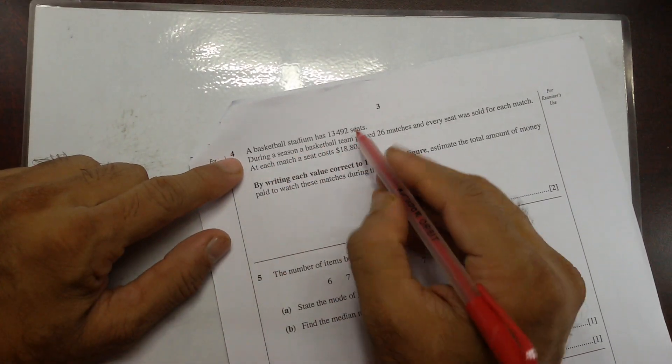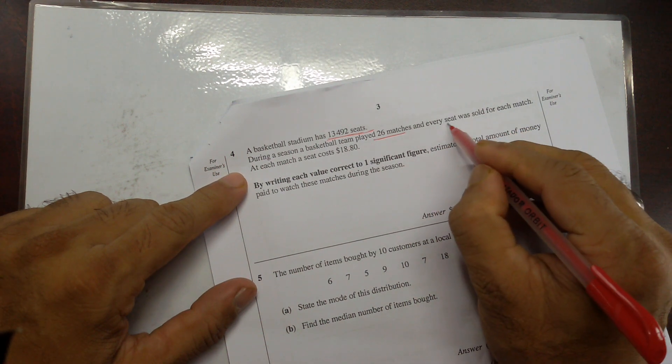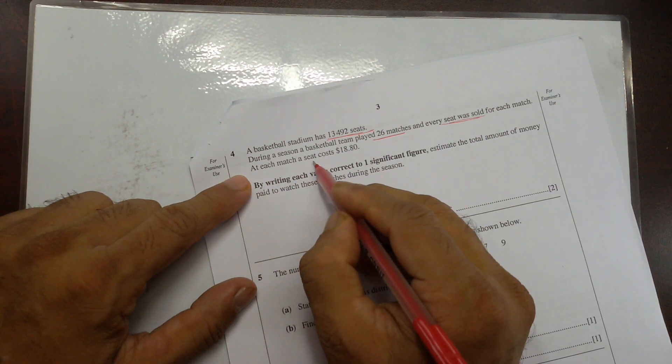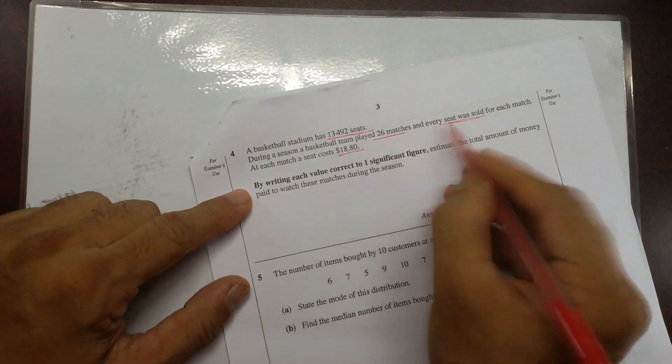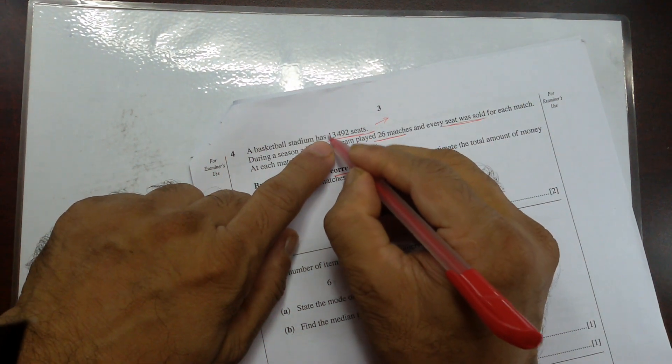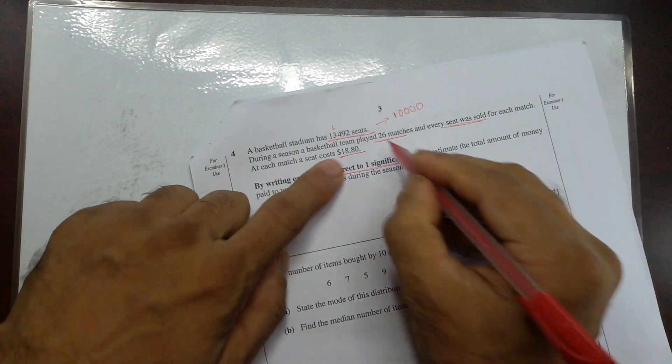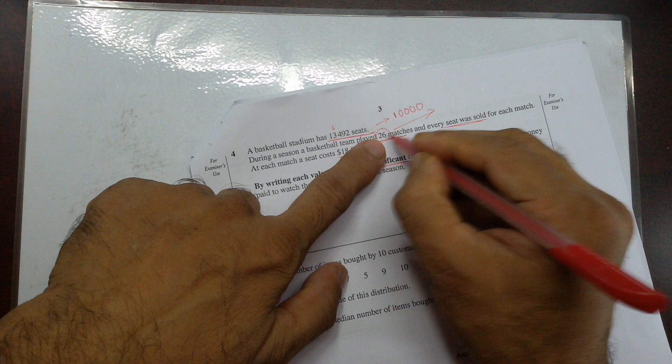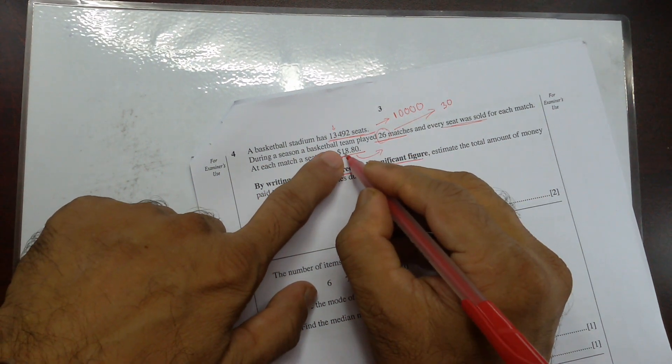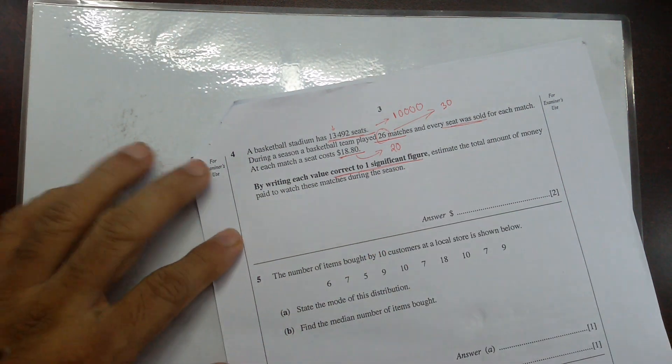Now question number 4. A basketball stadium has 13,492 seats. During a season, a basketball team played 26 matches, and every seat was sold. For each match, a seat cost $18.80. By writing each value correct to one significant figure. So that can be written as one significant figure: second one is less than 5, so that's going to be 1, followed by 1, 2, 3, 4 digits, 10,000. Now 26 matches, second digit is more than 5, so it's going to be 3, and after this one there's 1 digit, so 30. And this is going to be 2, and then 20. All of these numbers are expressed as 1 significant figure.